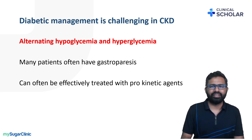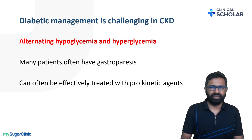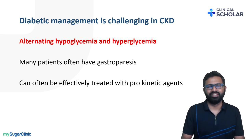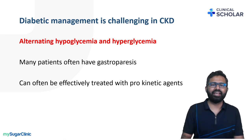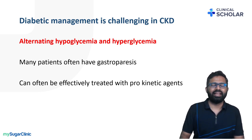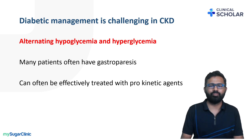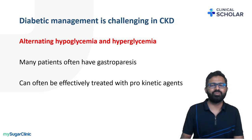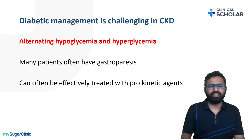There are certain patients with diabetic nephropathy who have alternating hypoglycemia and hyperglycemia because of gastroparesis. Diabetic nephropathy is a microvascular complication, so these patients can also have other microvascular complications like diabetic autonomic neuropathy, and diabetic gastroparesis is a characteristic feature of autonomic neuropathy. The movement of food in the gut is not proper, hence the patient can have hypoglycemia and hyperglycemia alternately because of erratic movement of food in the gut. This can be treated effectively by using prokinetic agents.